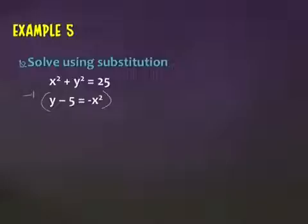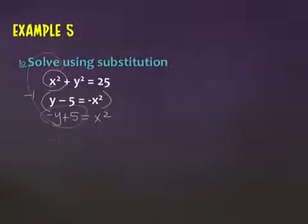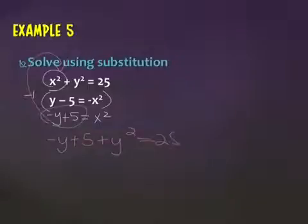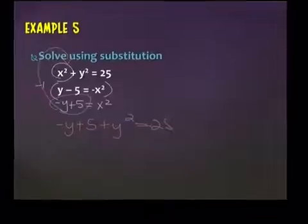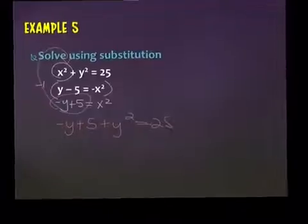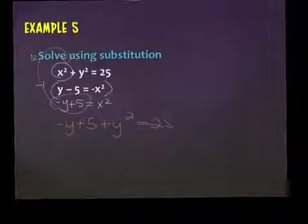So if I multiply by negative one, I get negative y plus five equals x squared. And then in place of this whole x squared, substitute in: negative y plus five plus y squared equals 25. And then as soon as you see the y squared and the y, it's your hint to get everything to one side and factor it.